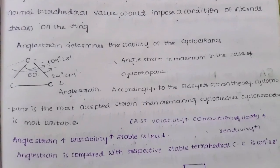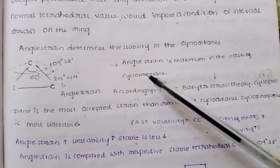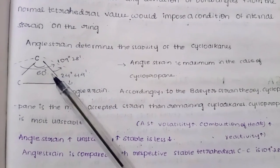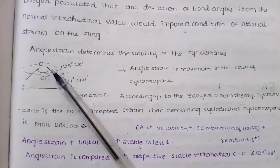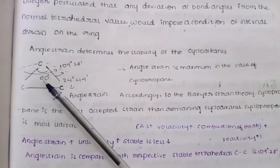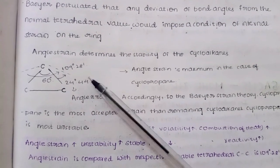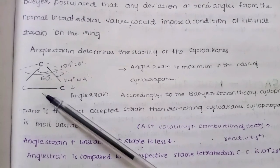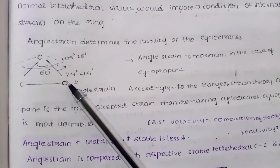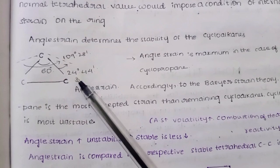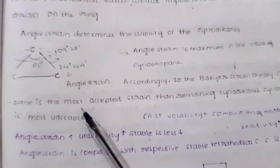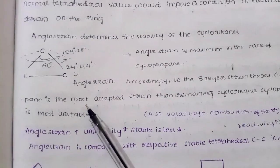Angle strain determines the stability of a cycloalkane. More strain means it is an unstable compound; less strain means it is a stable compound. For cyclopropane, which has three carbons, the dotted lines indicate the tetrahedral value of 109.28°. In an equilateral triangle, each angle is 60°. The deviation from the tetrahedral value gives an angle strain of 24.44° — that is, 109.28° minus 60° divided by 2 equals 24.44°. This strain is maximum for cyclopropane.